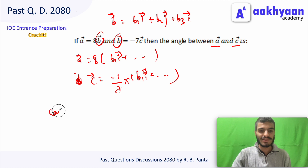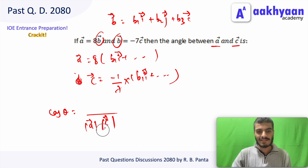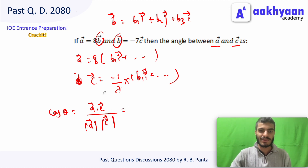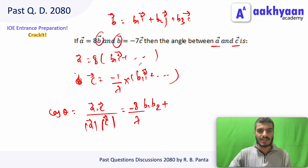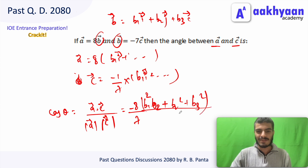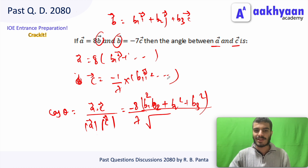We need the angle between a and c. Using cos theta = (a · c) / (|a| |c|), we compute a · c. The dot product gives b1*b1 + b2*b2 + b3*b3 terms, divided by root of (b1² + b2² + b3²) squared. The common terms cancel, giving cos theta = -8/7, so the answer is -8/7.